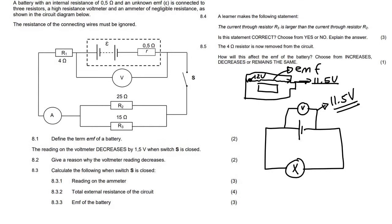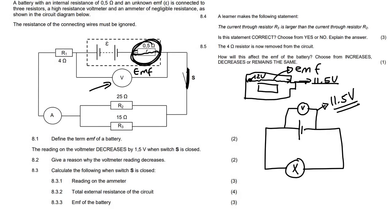When the switch is open there is no electricity flowing, so the voltmeter actually measures the EMF. But as soon as you close the switch, electricity starts flowing and the voltmeter decreases a little bit, because when electricity flows through the battery the internal resistance becomes activated and starts to decrease the voltage. So the reason the voltmeter decreases is because of the internal resistance in the battery.